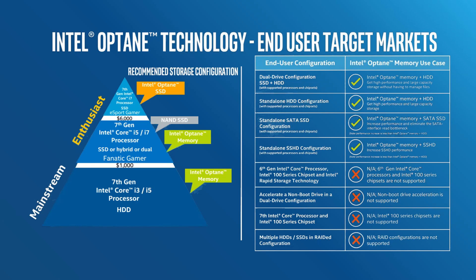For reference, SATA has a maximum theoretical throughput of 600 megabytes a second, which comes down to about 550 megabytes a second after overhead is accounted for. M.2 has a maximum theoretical throughput of 4 gigabytes a second, which comes down to about 3.9 gigabytes a second after overhead is accounted for.